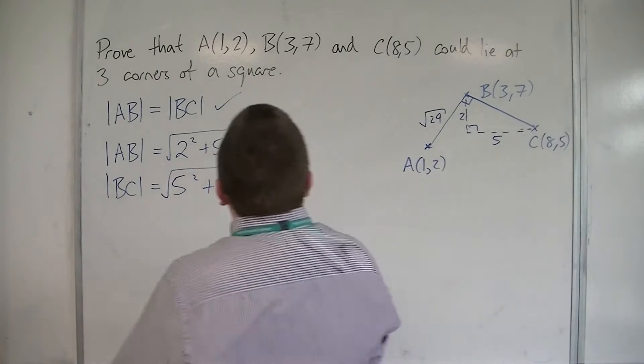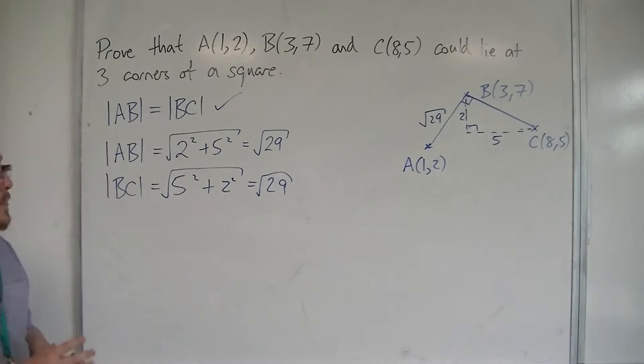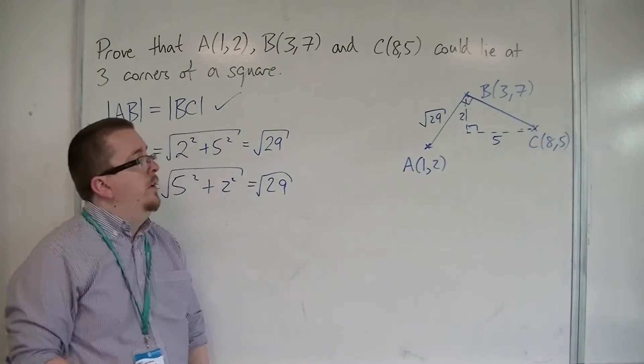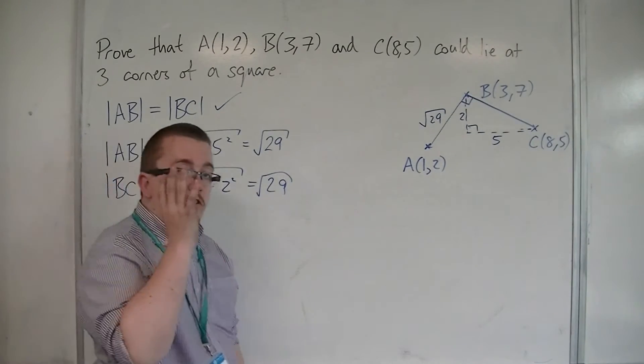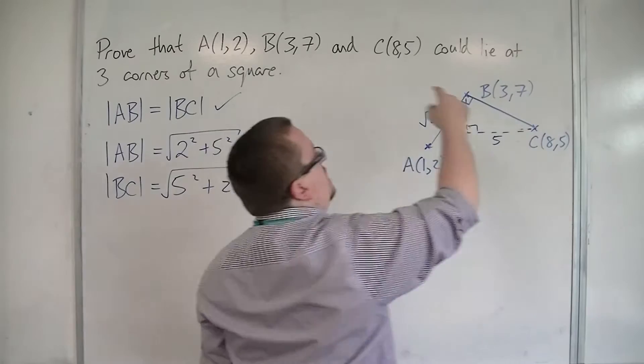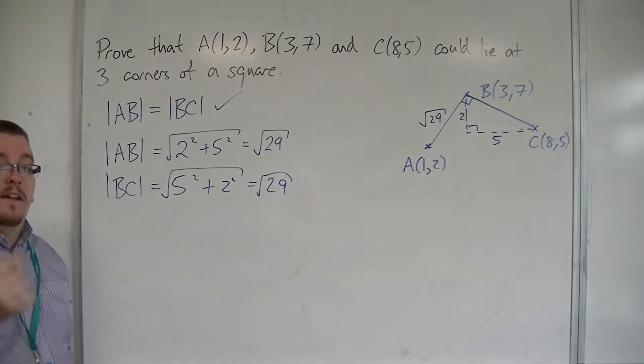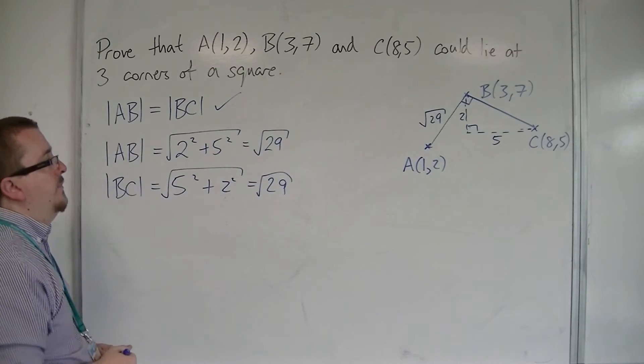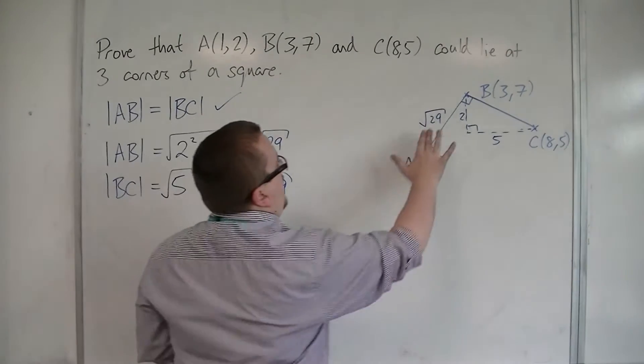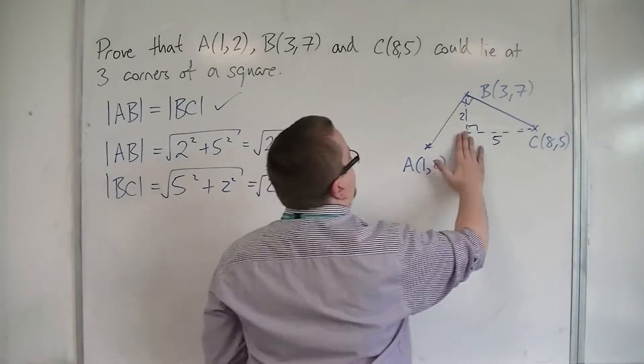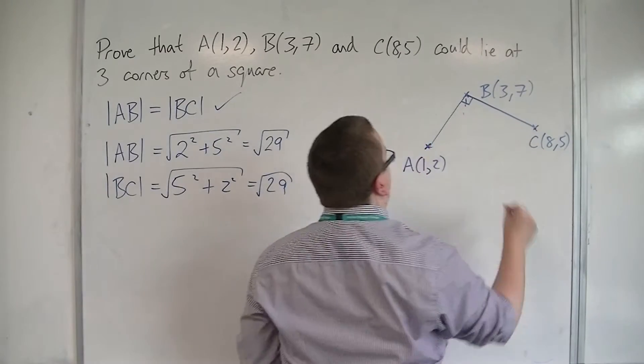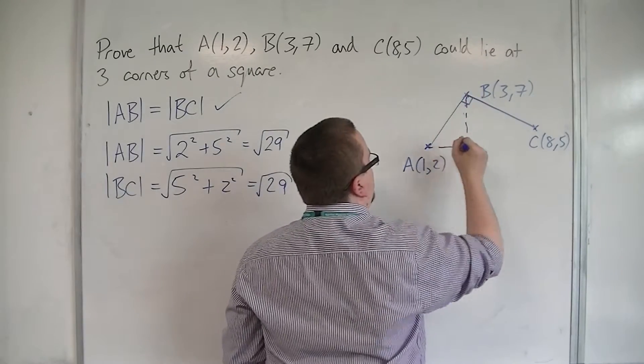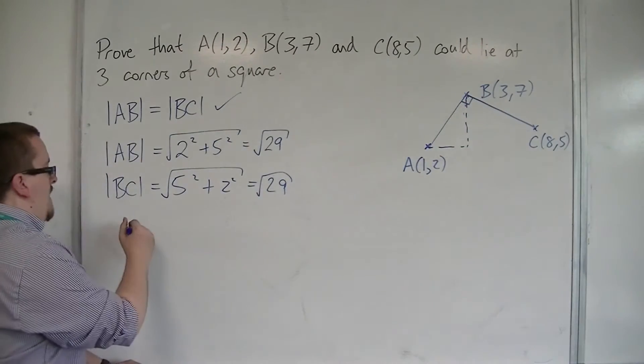The next thing to do is to think about making sure that this is a right angle. So, what we're going to do is to show that the line AB and the line BC are perpendicular, so we need to know the gradients of those lines. So, let's think about the gradient of AB, and we're going to call that m1.